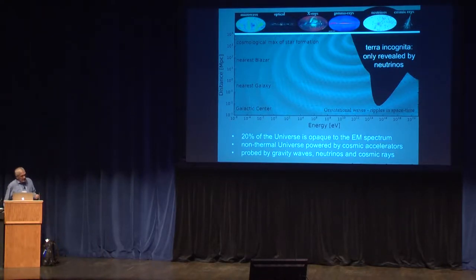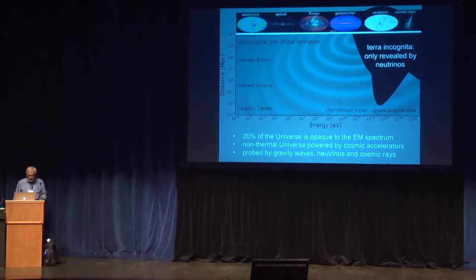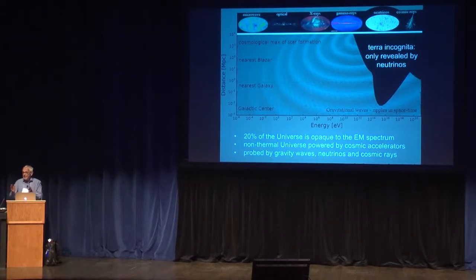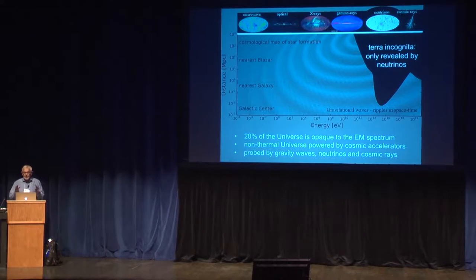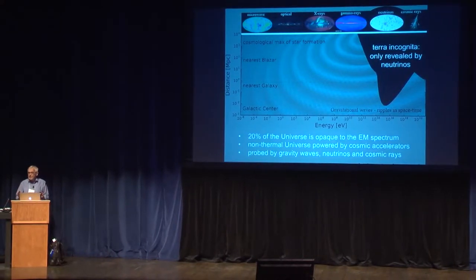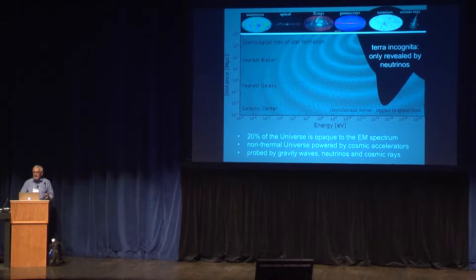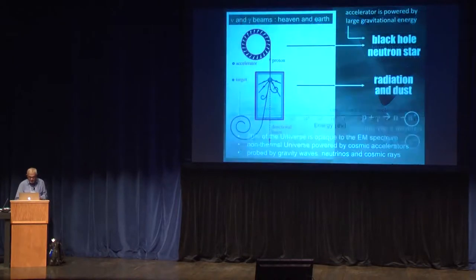The reason for building IceCube was simply that 20% of the universe is opaque to photons, so we have never seen it, but we know it exists because there are cosmic rays of those energies or wavelengths. Of course, this is the non-thermal universe, which we believe is powered by powerful cosmic accelerators. And so this universe is not probed by light, but by gravity waves, neutrinos, and cosmic rays.